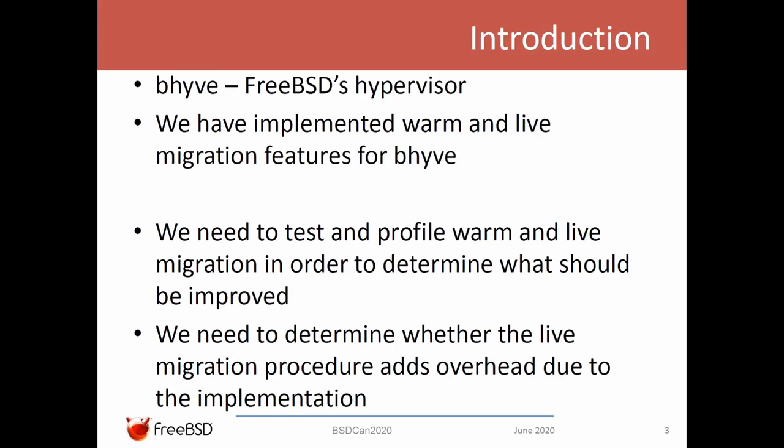Beehive is the FreeBSD hypervisor for which we have implemented warm and live migration features. We wanted to bring these features into upstream and we thought it would be nice to profile the code in order to determine what should be improved. Also, the live migration feature uses a dirty bit to discover memory modifications and has some changes in the virtual memory subsystem, and we want to be sure that we didn't add any overhead to the code.